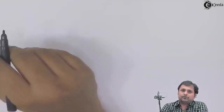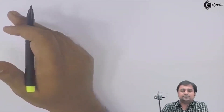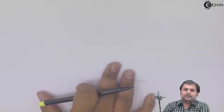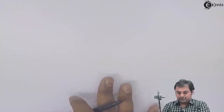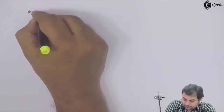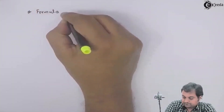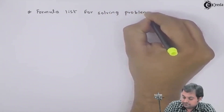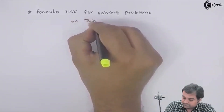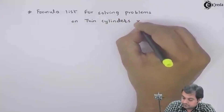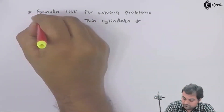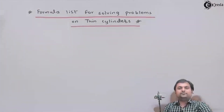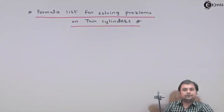Let me give a list of formulas for solving problems on thin cylindrical shells. I would be writing a number of formulae and based on that we are going to solve problems on thin cylinders. So the topic here is the formula list for solving problems on thin cylinders. I would be writing some formulas which are very important from the subject point of view as well as for solving the problems.